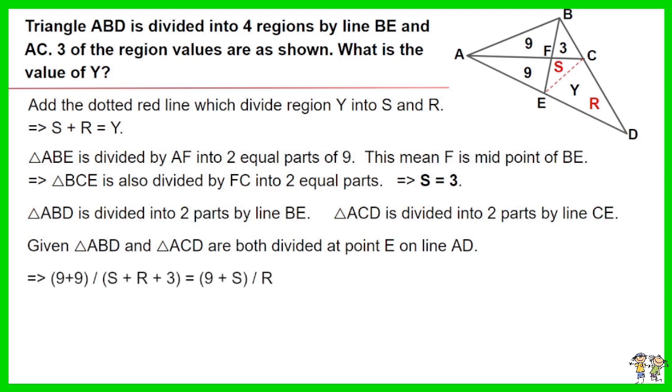As such, the ratio of 9 plus 9 over S plus R plus 3 in triangle ABD is equal to the ratio of 9 plus S over R in triangle ACD.